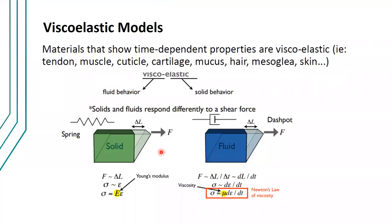Good day. Today we're going to talk about viscoelasticity and examples of viscoelastic materials. So far we have discussed solid behavior and in fluid mechanics, we have discussed how fluids and solids behave differently when they respond to a shear force. That's actually how we classify materials into either solids or fluids — it's how they respond differently to a shear force.